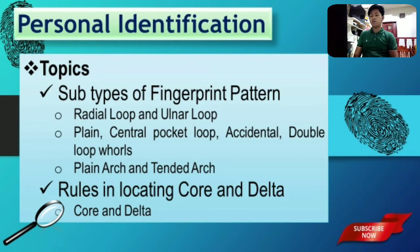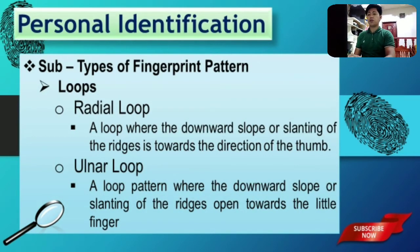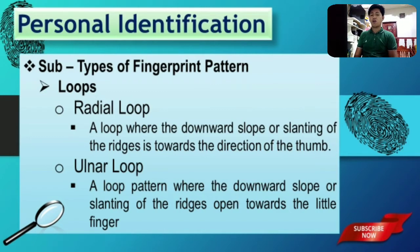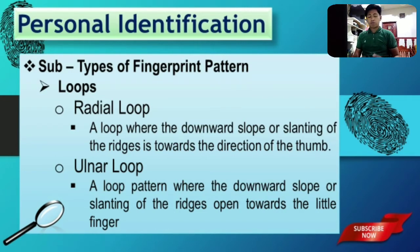Since our lecture will be quite long, let's jump into our discussion immediately. First, we will be talking about the subtypes of fingerprint patterns, specifically the division of loops. In our previous discussion, we mentioned that the key factor in identifying whether the pattern is a loop is the presence of only one delta and the presence of a recurving ridge. We illustrated already in our previous lecture what a recurving ridge is, so I hope we are all familiar with that.